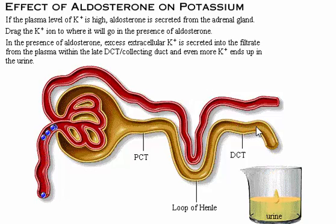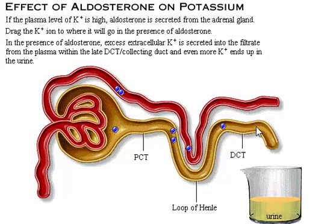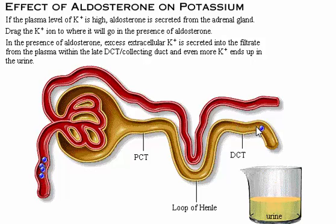In the presence of aldosterone, excess extracellular potassium is secreted into the filtrate from the plasma within the late distal convoluted tubule and collecting duct, and even more potassium ends up in the urine.